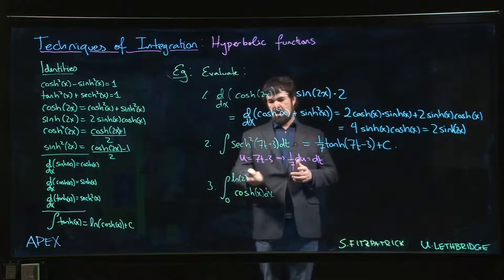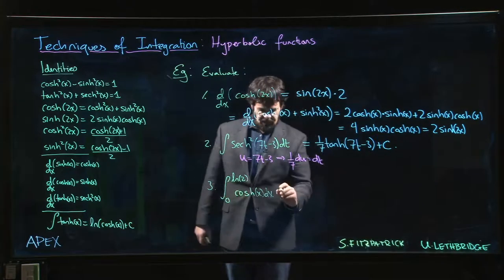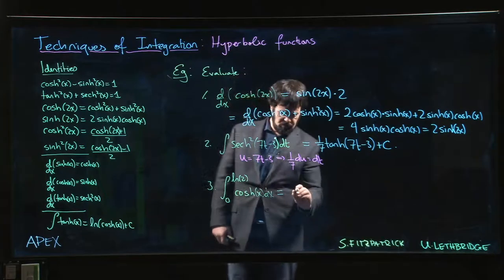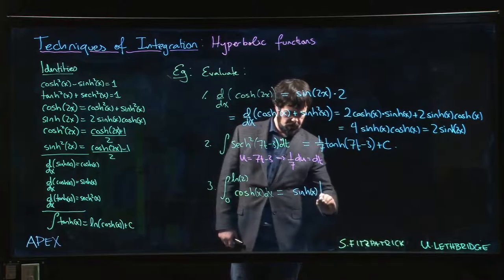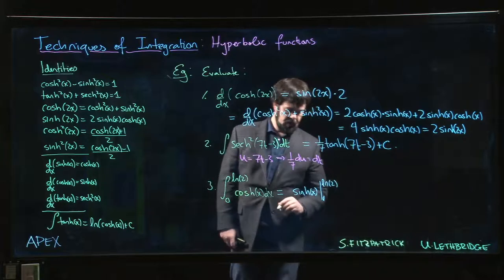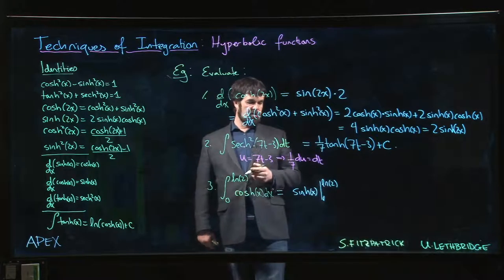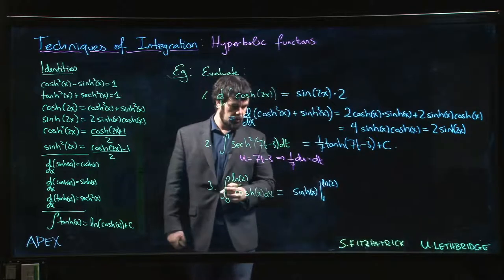And finally, a definite integral. We're just going to use the fundamental theorem of calculus. Anti-derivative for cosh is sinh, and we've got to evaluate at the endpoints from 0 to log(2). We've seen that sinh(0) is 0. What do we get at log(2)?